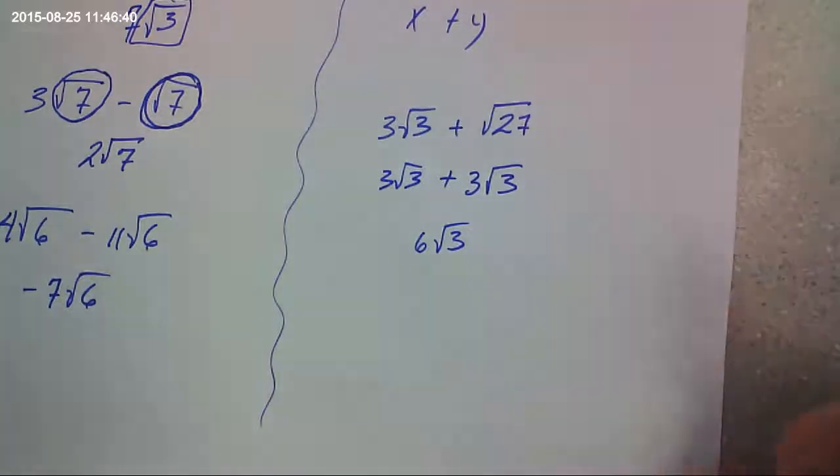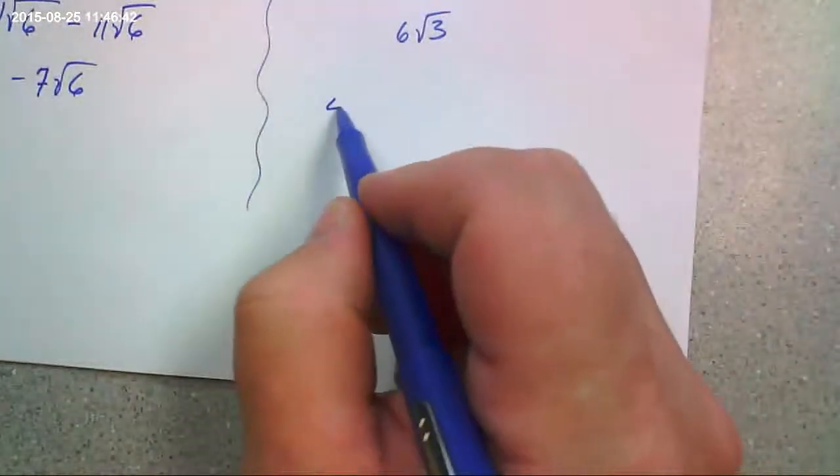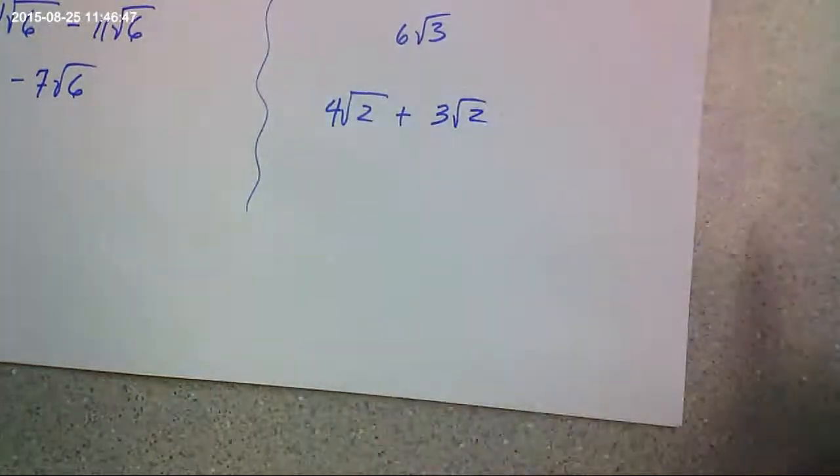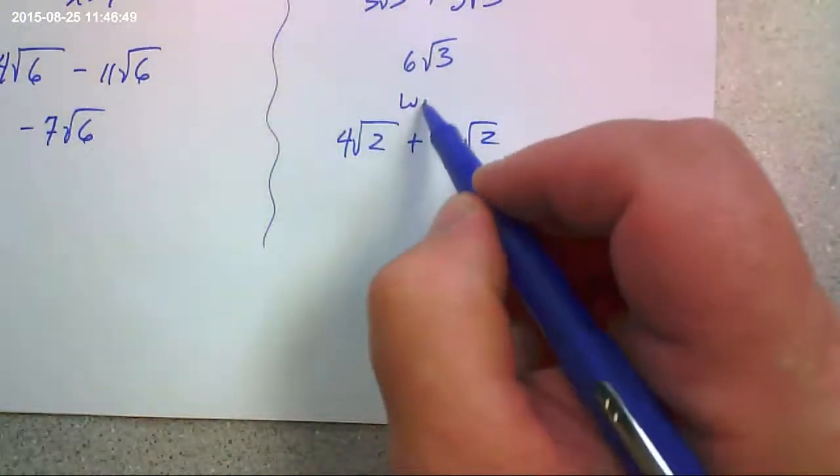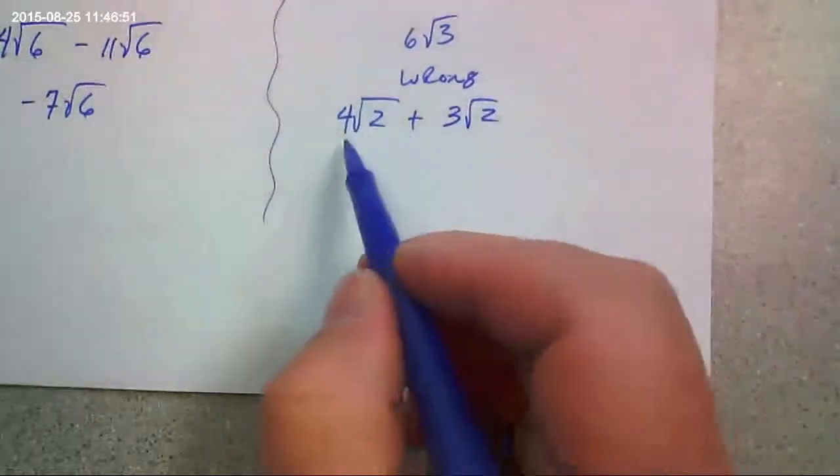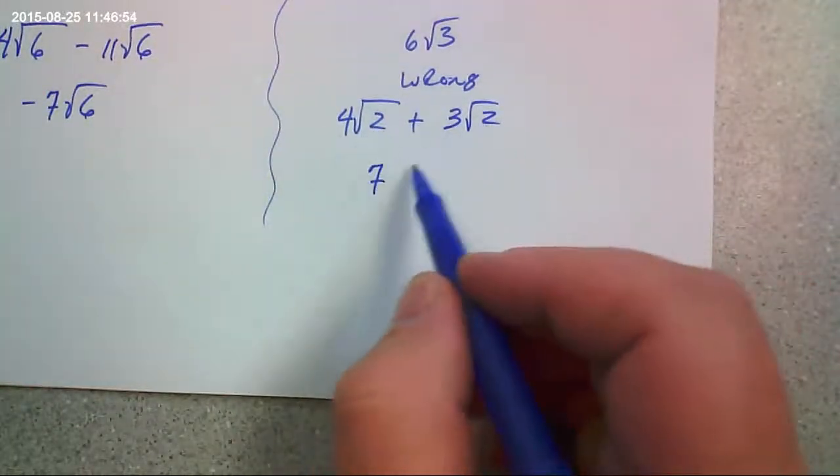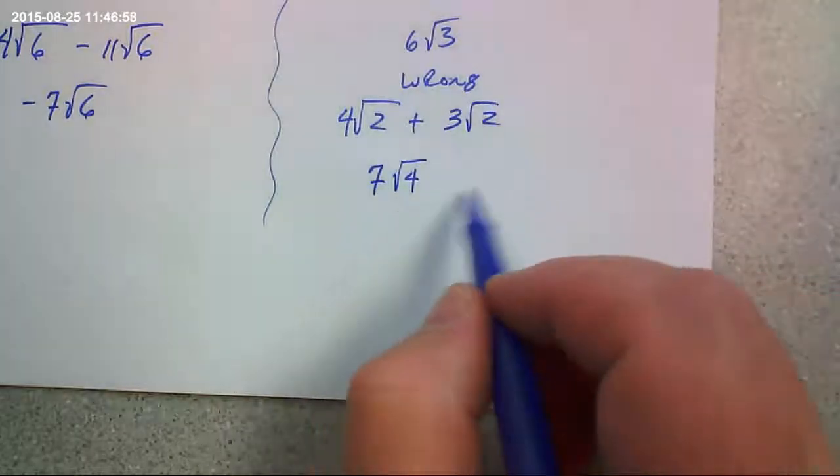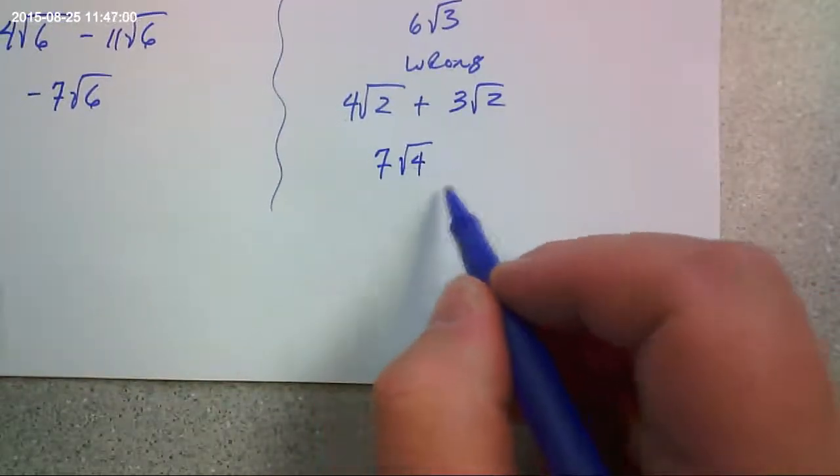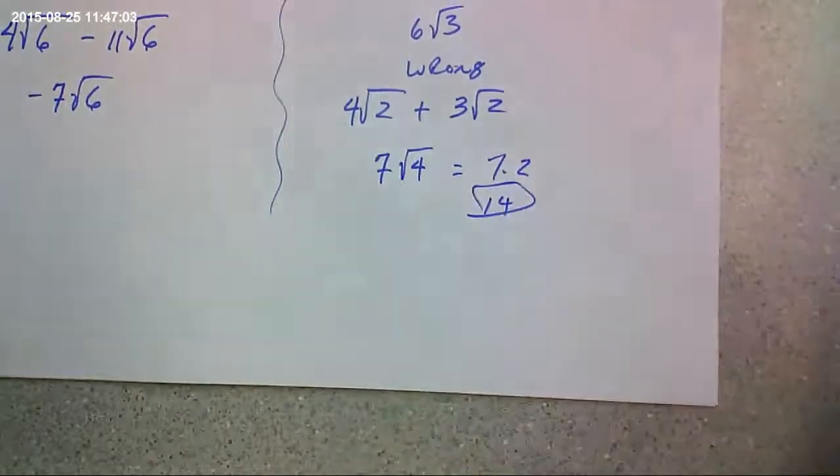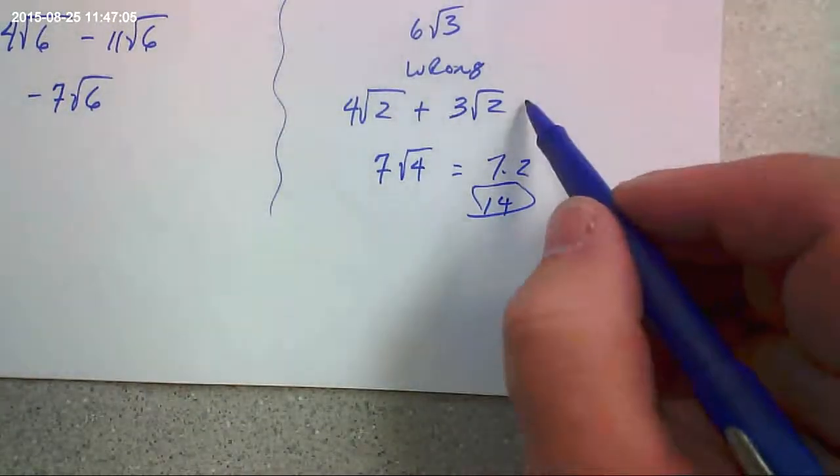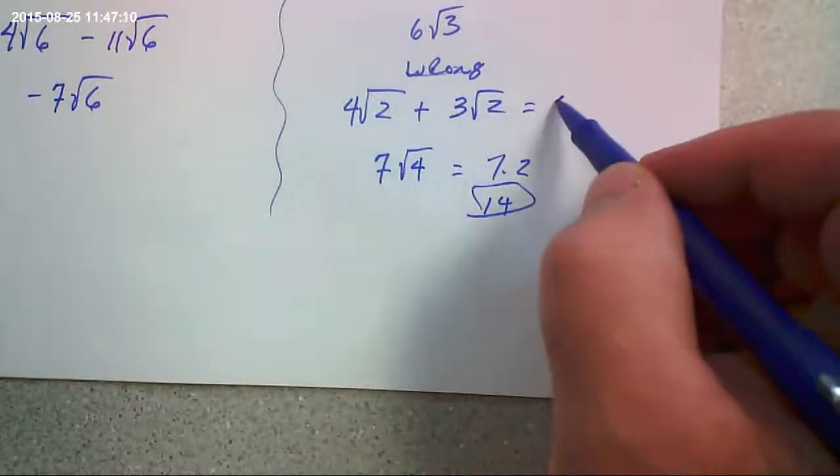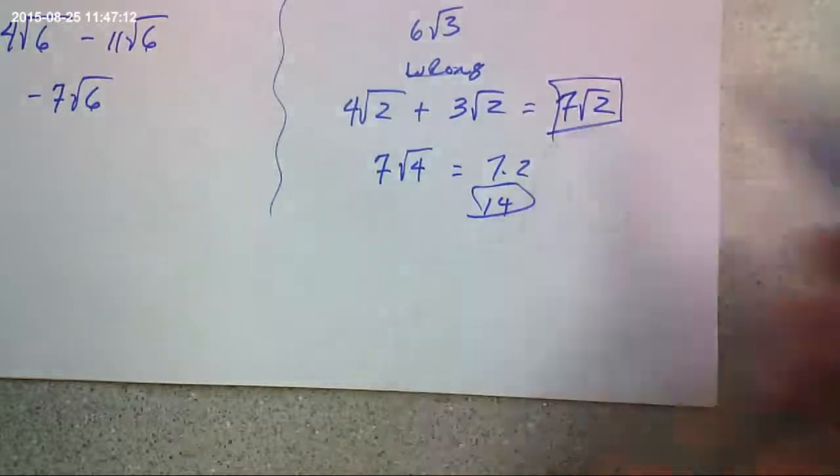A couple things to watch out for. Let's say we had this. Here's a common mistake, okay? So what I'm about to do is wrong. Common mistake. What people do is they say, oh well that's 7, and then they either add or multiply the radicands. And then they look and say, oh well that's just 2. So this is 7 times 2, so it's 14, which is of course wrong. The right way to do it is that we have square roots of 2. We have 4 square roots of 2 and 3 square roots of 2. That makes 7. So there.